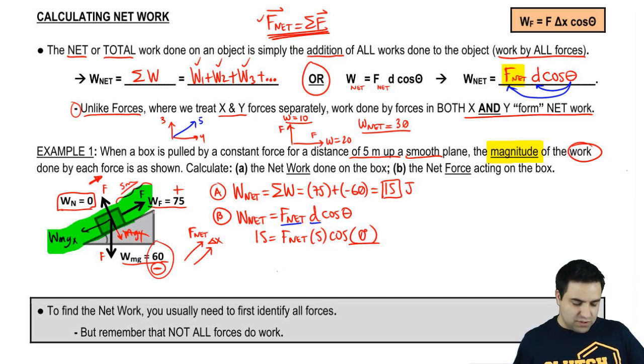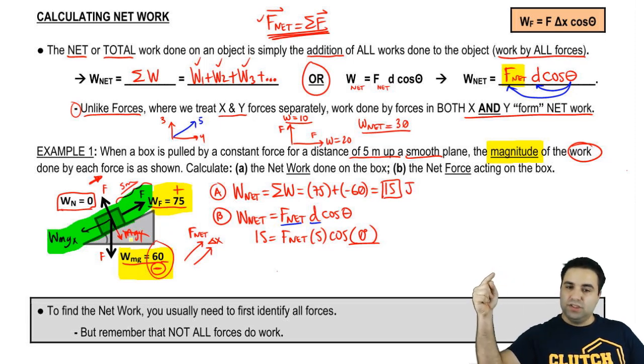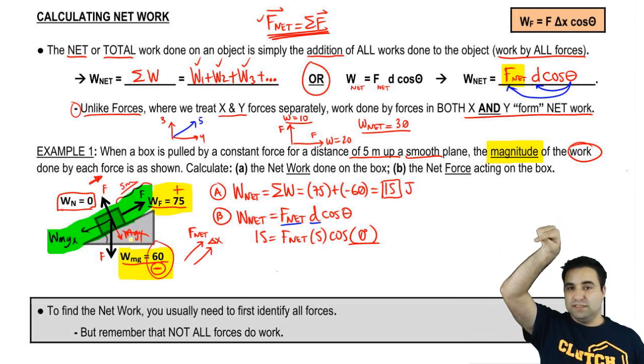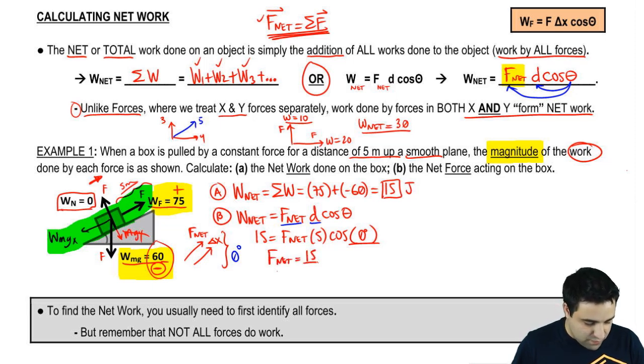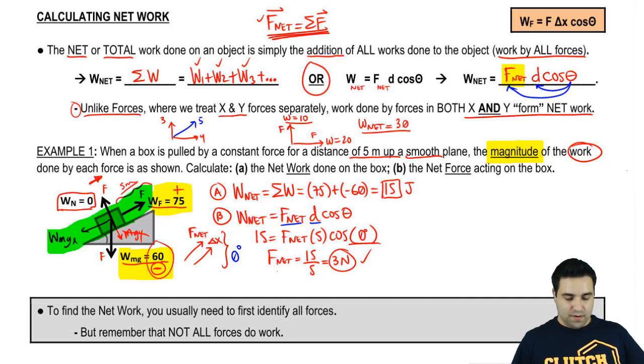So we can now calculate our net force. By the way, another way that you know that this thing is going up is the fact that the work going up is greater than the work going down. So you know that more energy is being pumped into moving this thing up. So because the energy is greater going up, this thing will end up going up. And therefore, I can confidently say that these are in the same direction, which means the angle I'm supposed to put there is 0. The cosine of 0 is 1, so F net is 15 over 5, which is simply 3 newtons. That's the net force acting on this object.